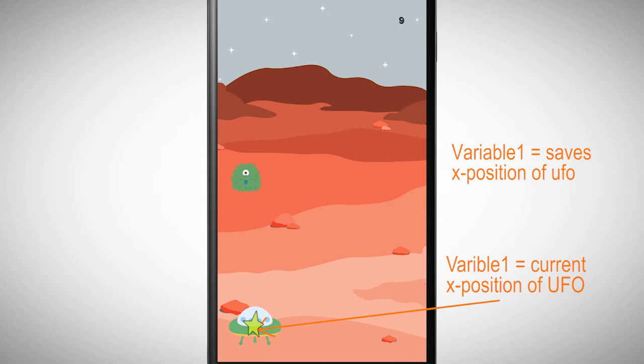At the same time, the star should appear at this position where the UFO is. The star needs for the right x position the value of the variable. The y-value is always the same, since the UFO is just moving horizontally.